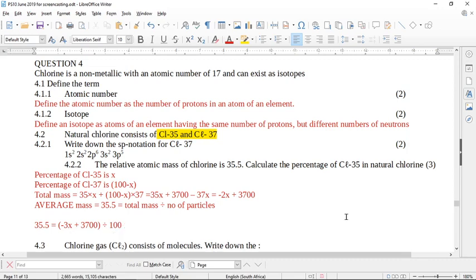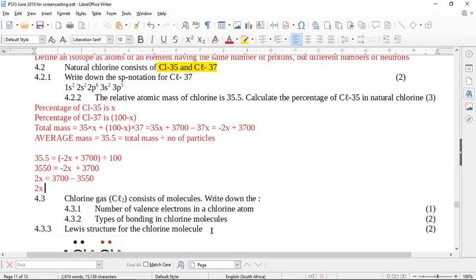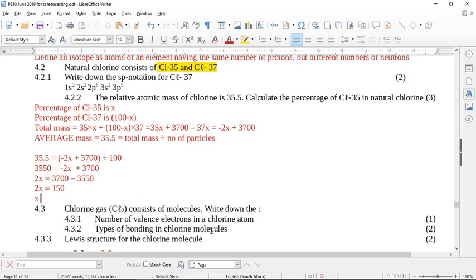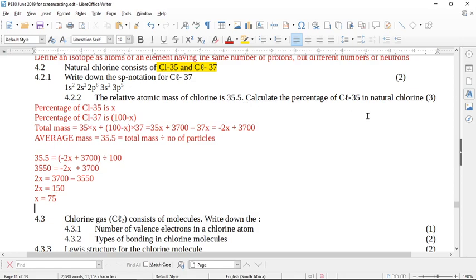Now we're going to do algebra. I want to get rid of the dividing by 100. So 35.5 times 100 is 3550 equals, how did I get minus 3X there? It's minus 2X. Where did I magically get this from? Sorry. Minus 2X plus 3700. So now by the power invested in you by algebra, you will end up with 2X equals 3700 minus 3550. And if I solve, minus 2X equals 75, you will end up with 2X equals 150, which means X equals 75, which means 75% are chlorine-35. So we need to write that down. The percentage of chlorine-35 is 75%.